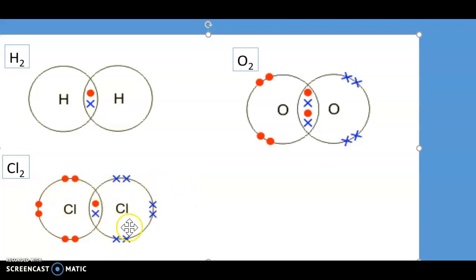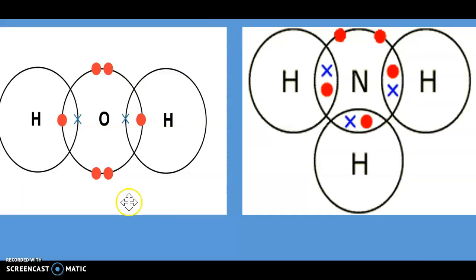It has seven electrons in the outer shell, 17 in total, so they share one electron to get full shell outer configuration. And again, chlorine is represented as Cl2. Looking at some more covalent bonding.